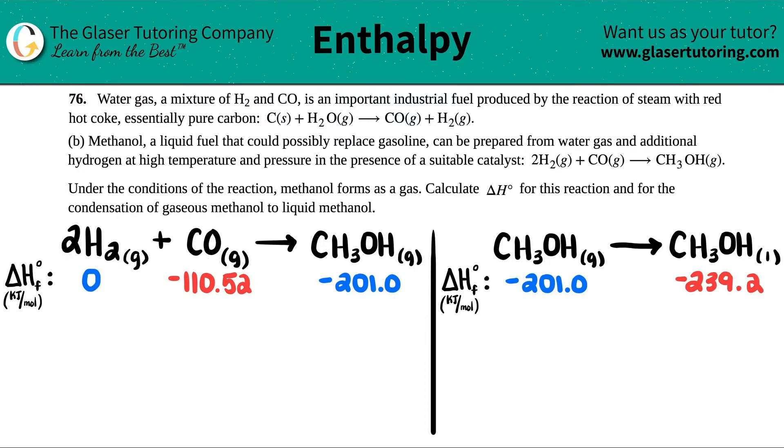So that's the one I wrote down here: 2H2 gas plus CO gas will yield us methanol. Under the conditions of the reaction, methanol forms as a gas. Calculate the delta H for this reaction and for the condensation of gaseous methanol to liquid methanol.